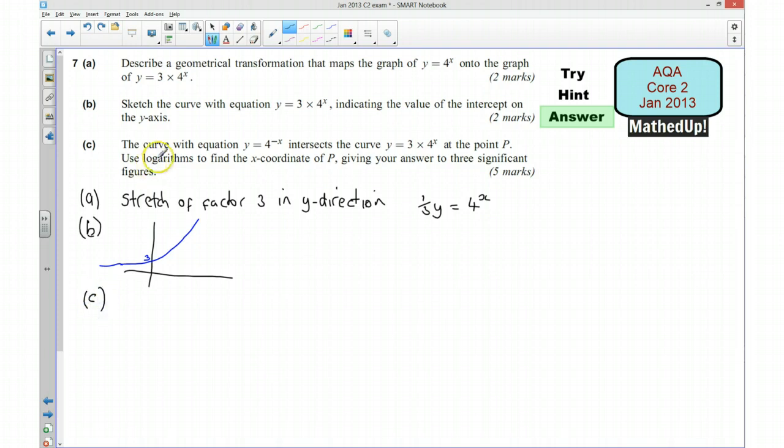Part C. So what we said is that we would use simultaneous equations to solve this. So that means 4 to the negative x is going to be equal to 3 times 4 to the x.